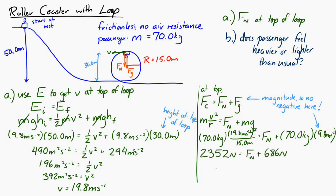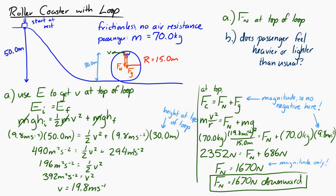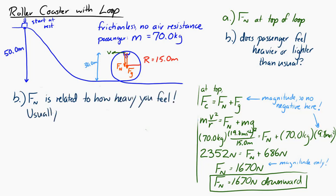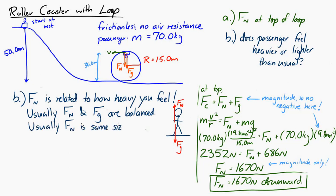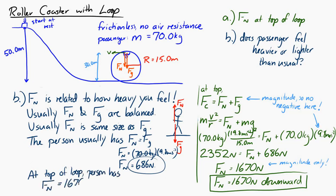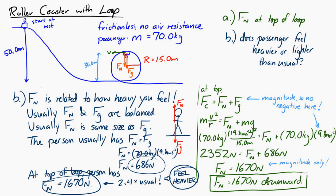Solving for the normal force: plugging in 70 kg, V = 19.8 m/s, R = 15 m, and g = 9.8 m/s², the normal force equals 1670 newtons downward. Normally, the normal force balances the weight, which is 686 newtons for this 70 kg person. At the top of the loop they feel 1670 newtons — almost 2.4 times their usual weight — so they feel much heavier than normal.